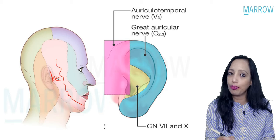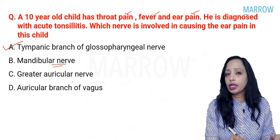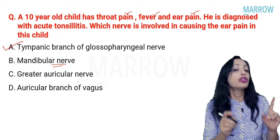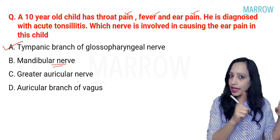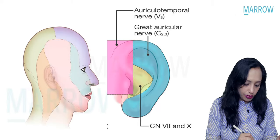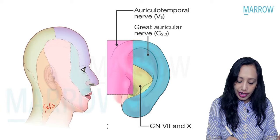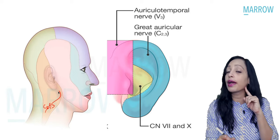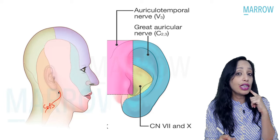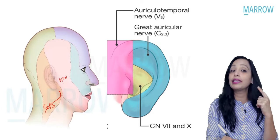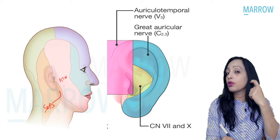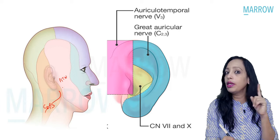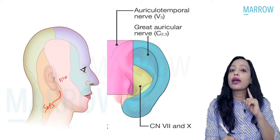A recent question asked: tragus is supplied by which nerve? The tragus is supplied by the auriculotemporal nerve. The third choice is the greater auricular nerve. Can there be referred pain in the ear because of the greater auricular nerve? Yes. The greater auricular is a branch of the cervical plexus — C2, C3 — and it goes to supply the angle of the jaw. This is a repeated question: the angle of mandible is supplied by the greater auricular nerve, not the auriculotemporal, which supplies the lower part of the mandible except for the angle.